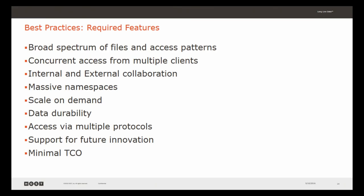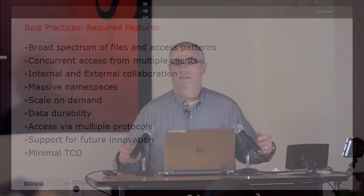Small files, big files — you need it all. You need it fast, you need high IOPS, you need high throughput. You need to be able to access that data from a number of clients both within and outside the organization. It's a workflow that really drives a high level of collaboration. Namespaces are important — you don't want to have to go to multiple targets with each project you're working on.